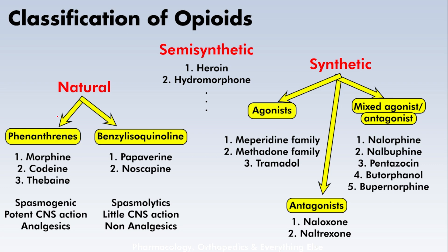Regarding opioid classification, we have natural, semi-synthetic, and synthetic opioids. Natural opioids include morphine and codeine. Semi-synthetic examples include heroin and hydromorphone. The natural and semi-synthetic opioids are both agonists. The synthetic opioids can be agonists, antagonists, or mixed agonist-antagonists.